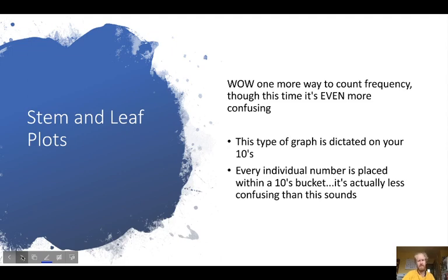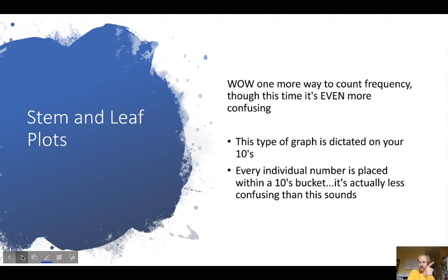Stem and leaf plots — these ones can be confusing, but they're actually really handy when you're trying to count stuff. The way you make one is you put all the tens digits on the left-hand side, and then every time you have a number, the tens digit is on the left and the ones digit follows on the right. If you have multiple of the same number on the right, it means you have multiple of that number. Let me just show you an example.